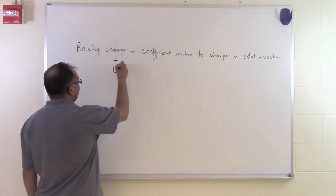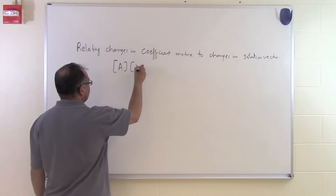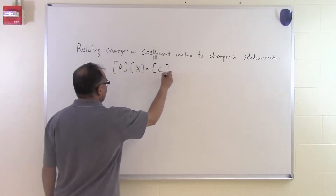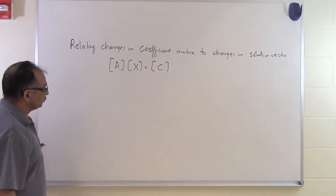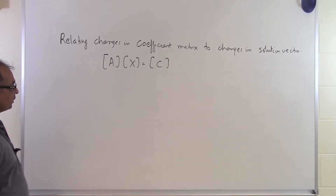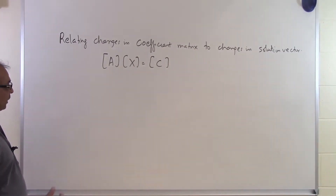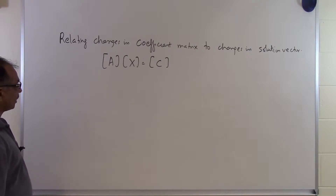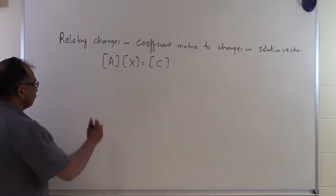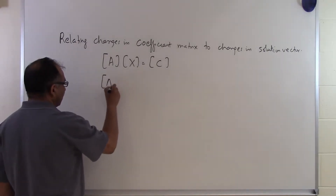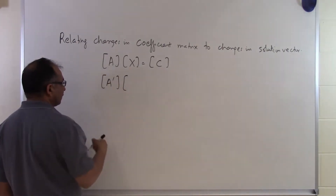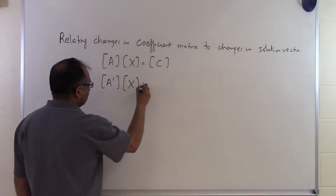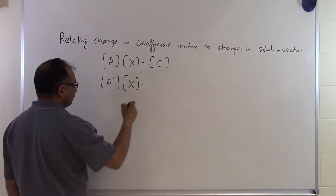Suppose somebody gives you a set of equations: A times x is equal to c. In order to figure out whether this particular set of equations is well-conditioned or ill-conditioned — meaning if I make a small change in the right hand side or in my coefficient matrix, do I get small or large changes in my solution vector? We're going to change our coefficient matrix a little bit and call the new matrix A prime.